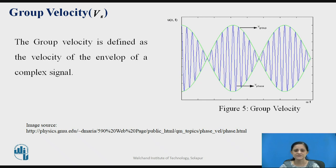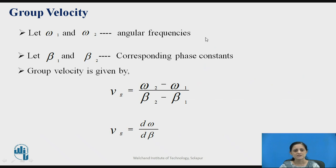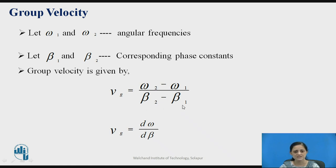The group velocity is generally defined with the letter Vg. Let us consider two angular frequencies omega 1 and omega 2, with corresponding phase constants beta 1 and beta 2. The group velocity Vg equals the difference in angular frequency divided by the difference in phase constant — that is, omega 2 minus omega 1 upon beta 2 minus beta 1. The change in omega can be written as d-omega and the change in beta as d-beta. So Vp equals omega by beta, whereas Vg equals d-omega by d-beta.